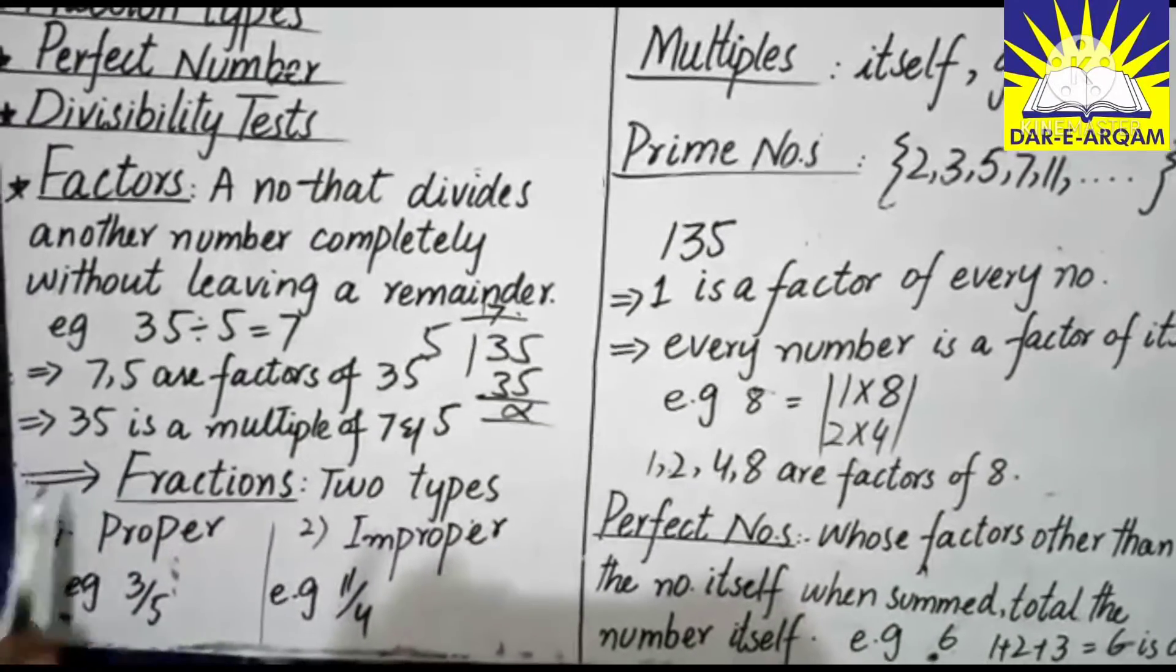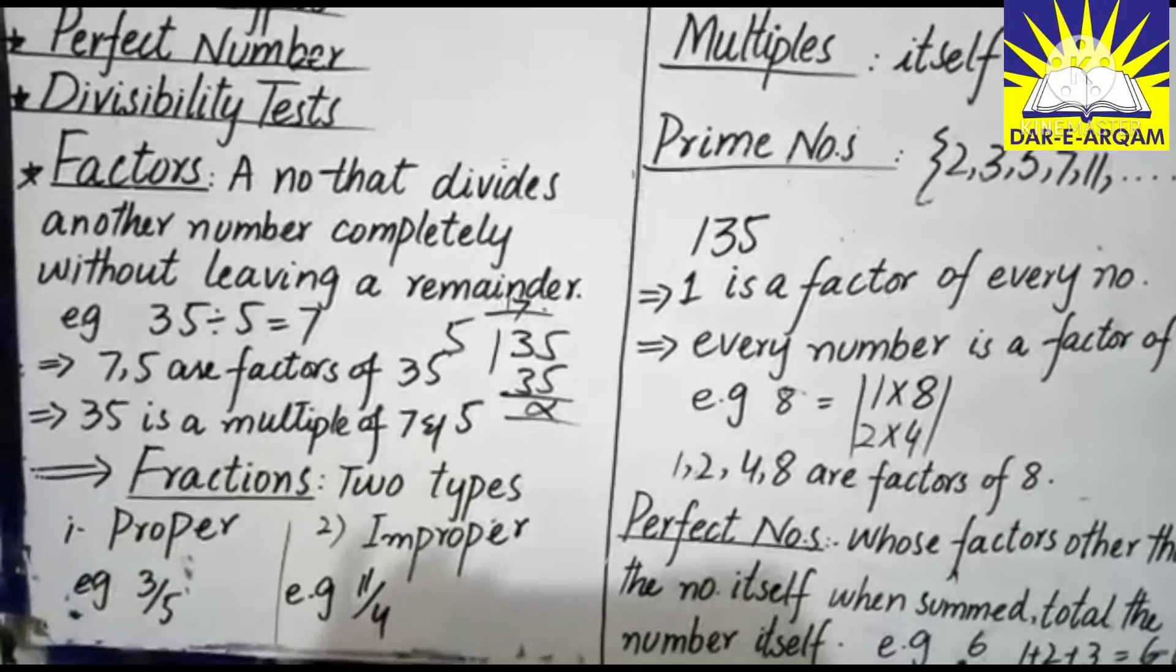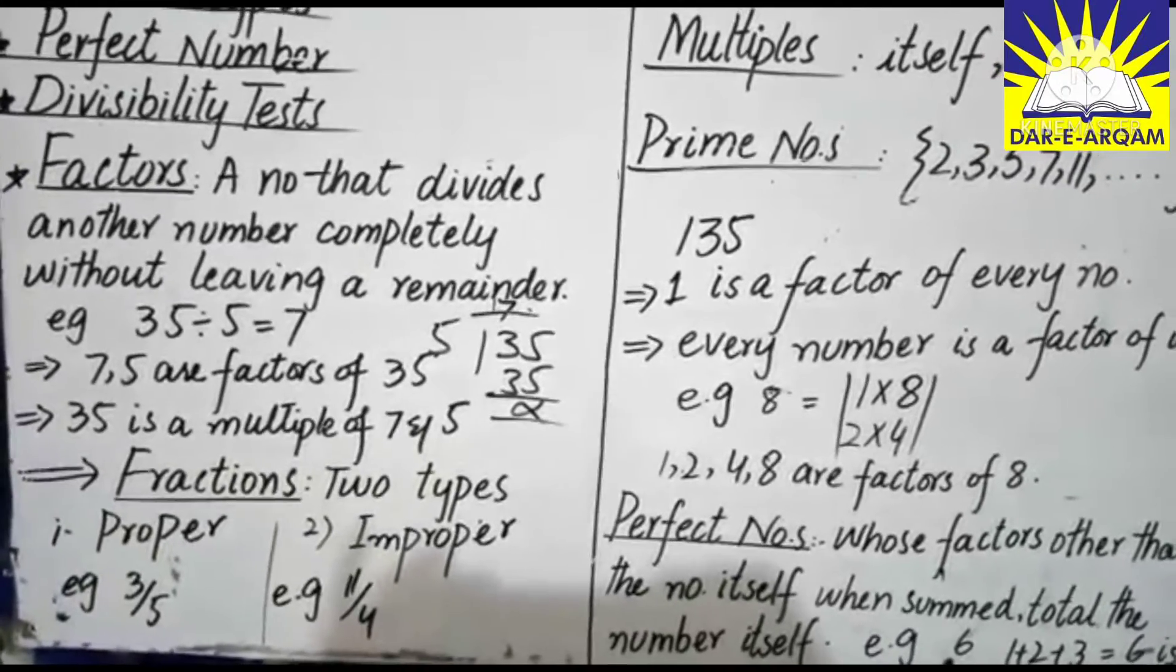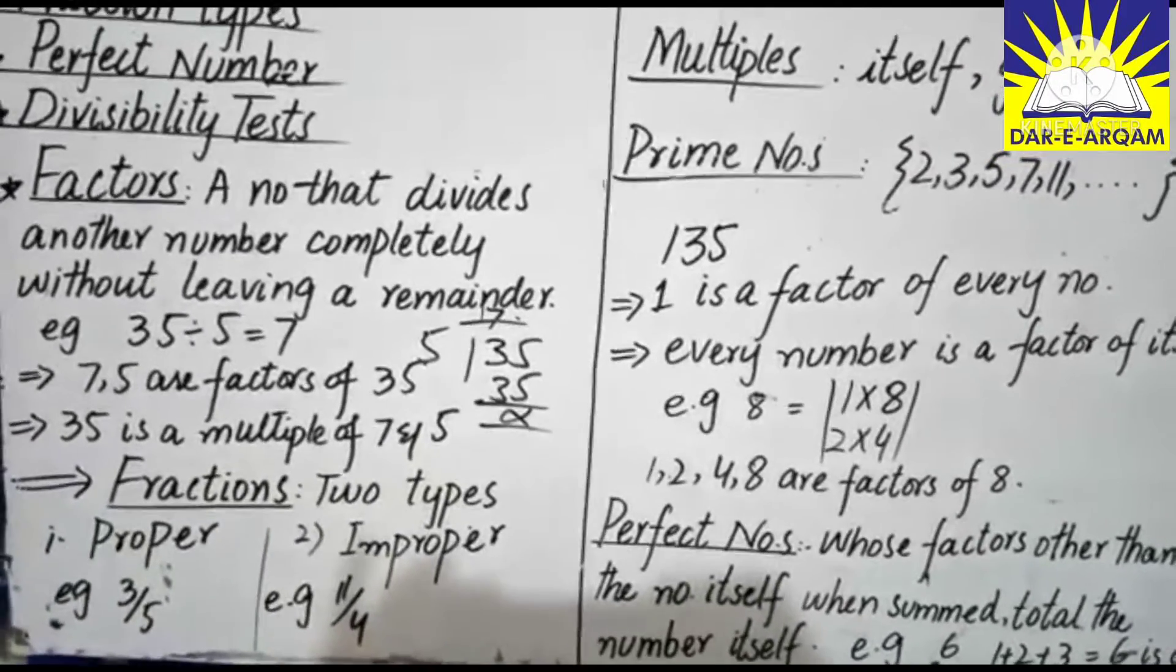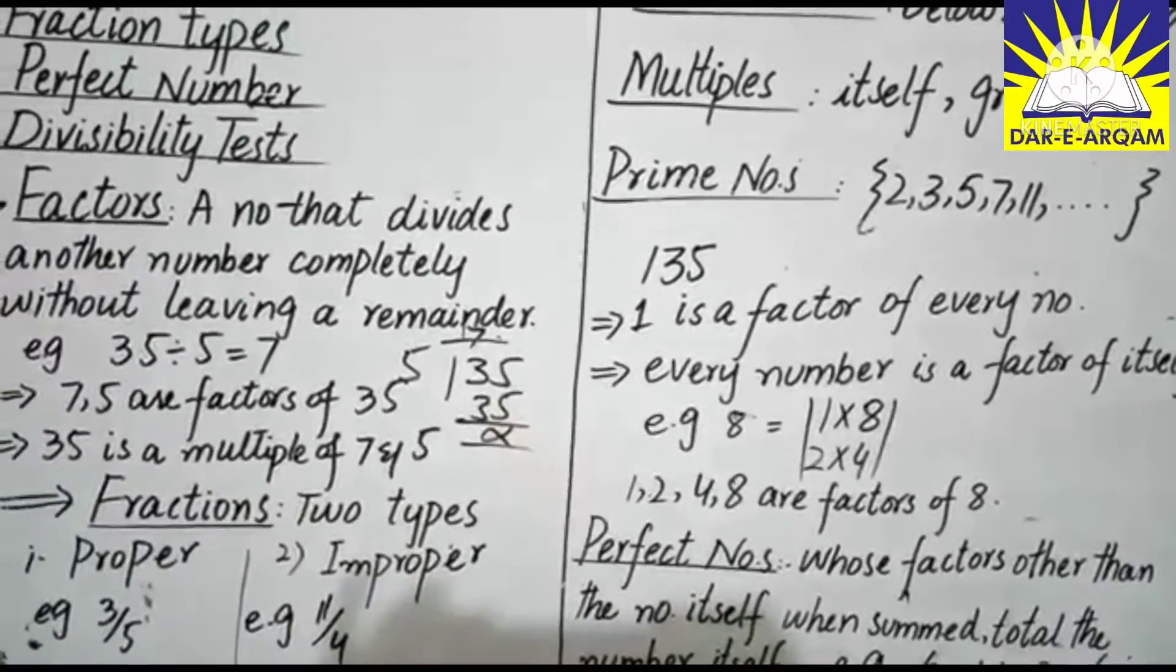If we talk about 35, then 35 is 7 and 5. Multiple means 35 is in the 7 table and in the 5 table. Next is fractions.